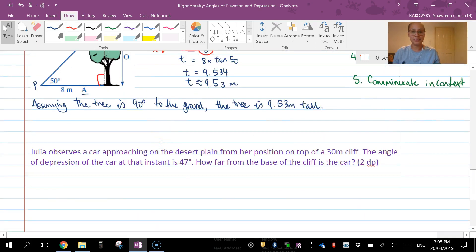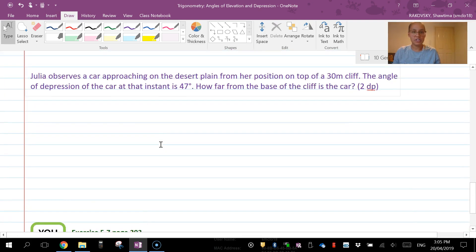This one here is an example of a question that hasn't been done with a diagram, and also it's an angle of depression question. Julia observes a car approaching on the desert plain from her position on top of a 30 meter cliff. The angle of depression of the car at the instant is 47.